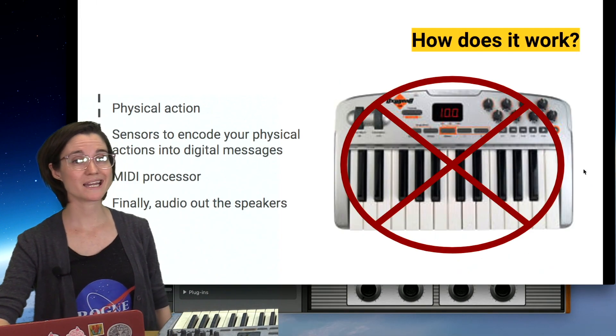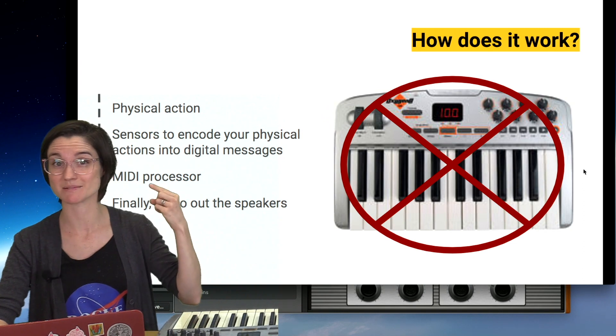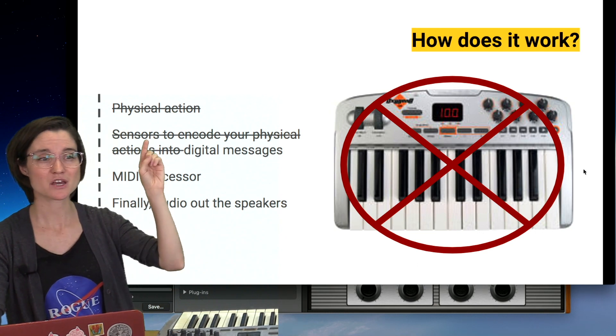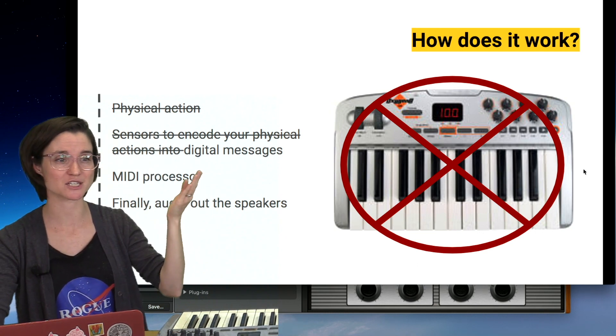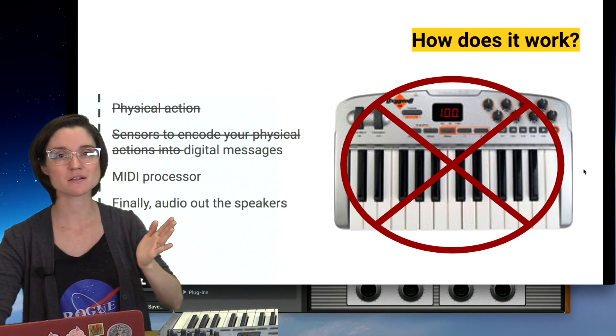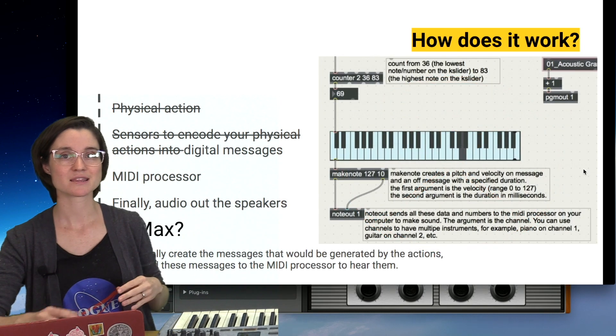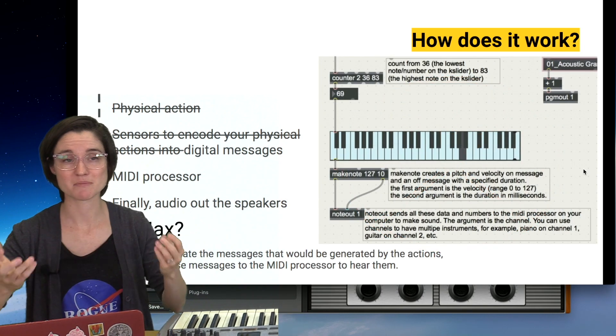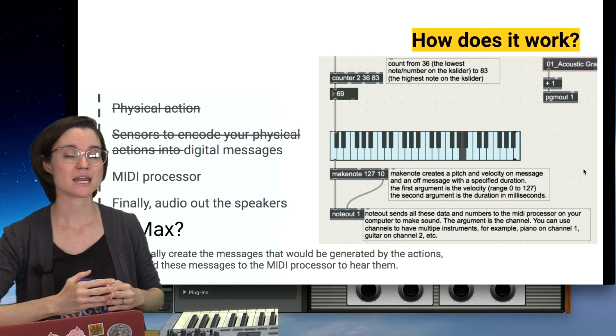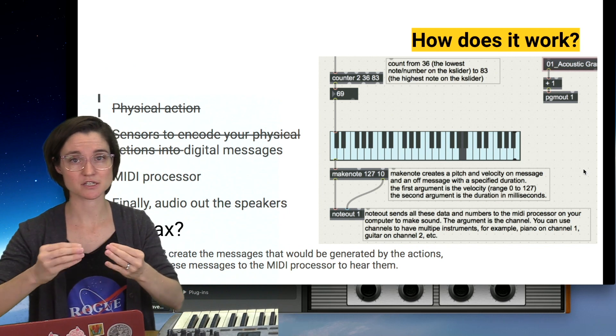Okay, so what if you want to do this, but you don't have a physical keyboard? Or what if your professor is making you do this without a physical keyboard? Yes, easy. What we're going to do is we're going to take out the first two steps of this where we have the physical action and the sensors to encode the physical action. And we're going to start straight with digital messages. So if you're following along in my channel and you're learning Max, you know that in Max, we have many objects that can create integers, digital messages. And then what we can do is we can take those integers and send them to some other objects in Max that handle the MIDI processing.